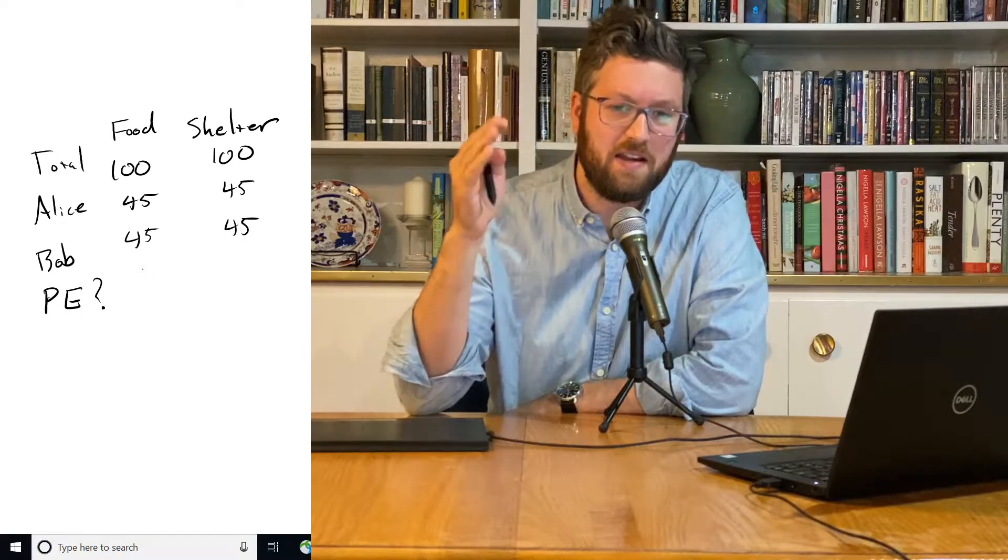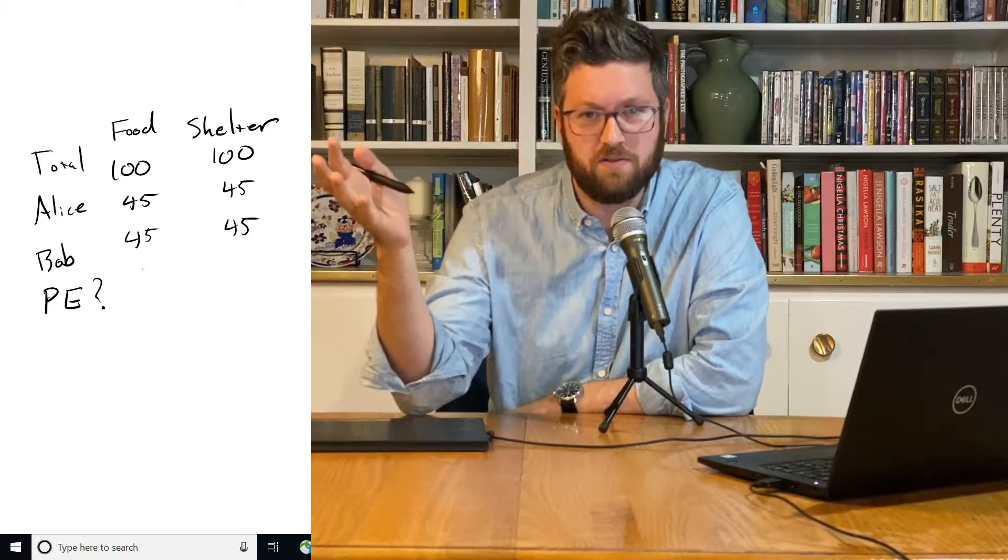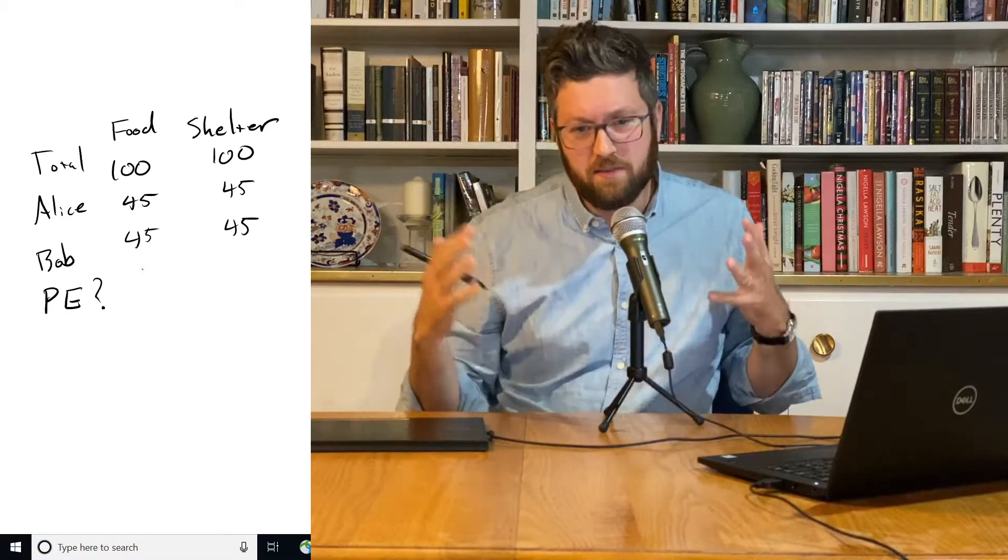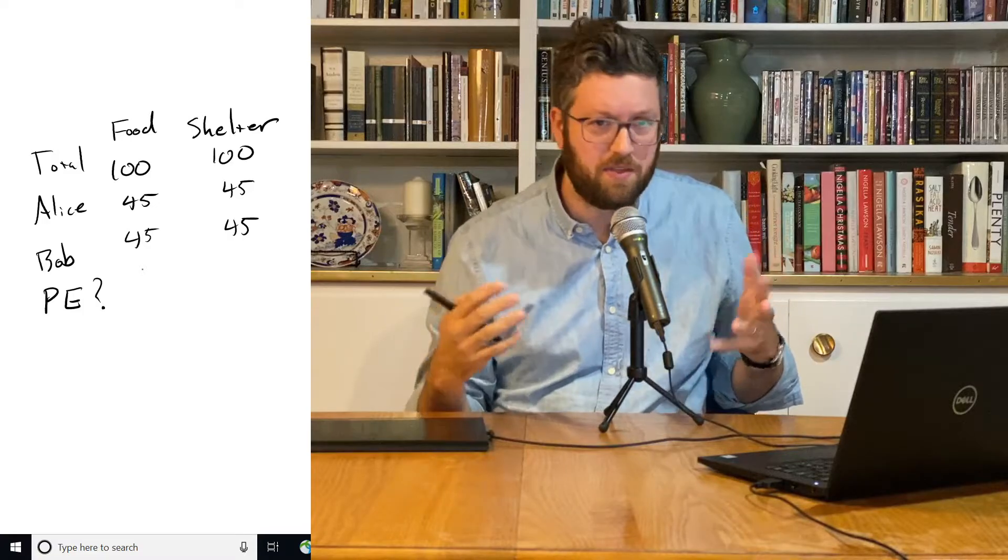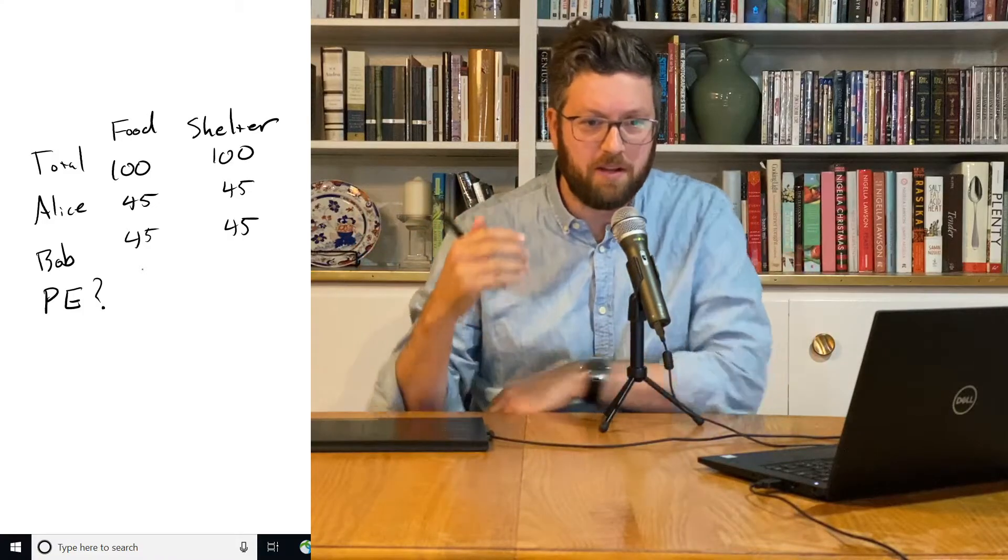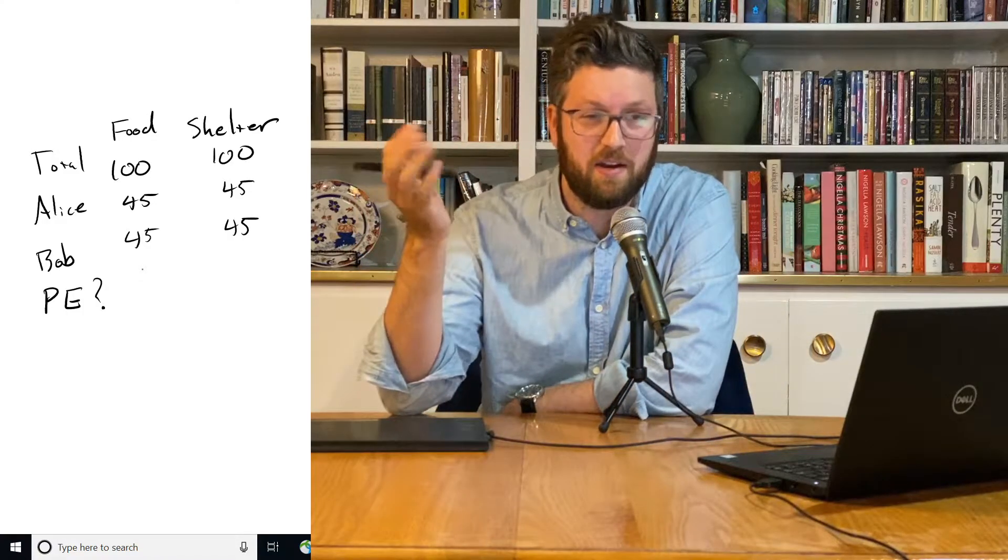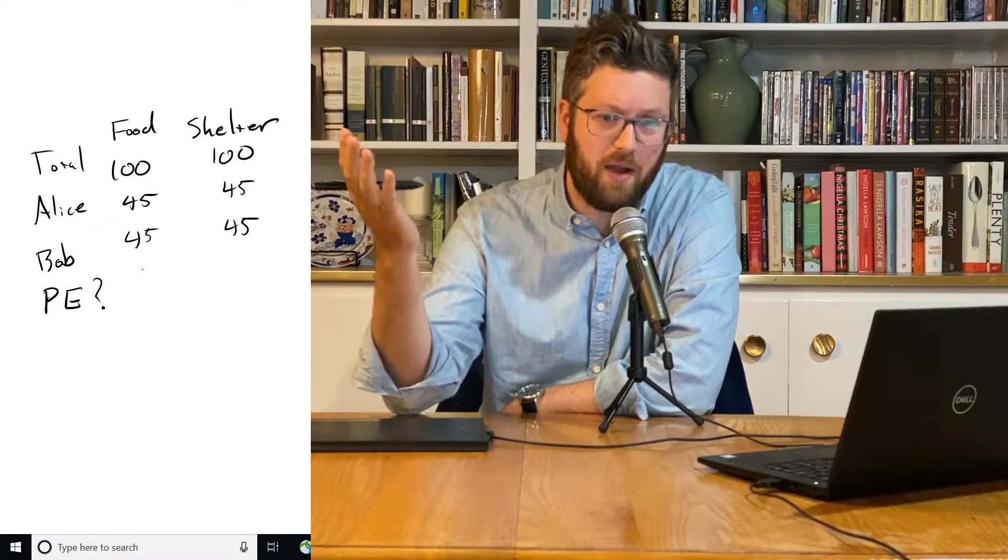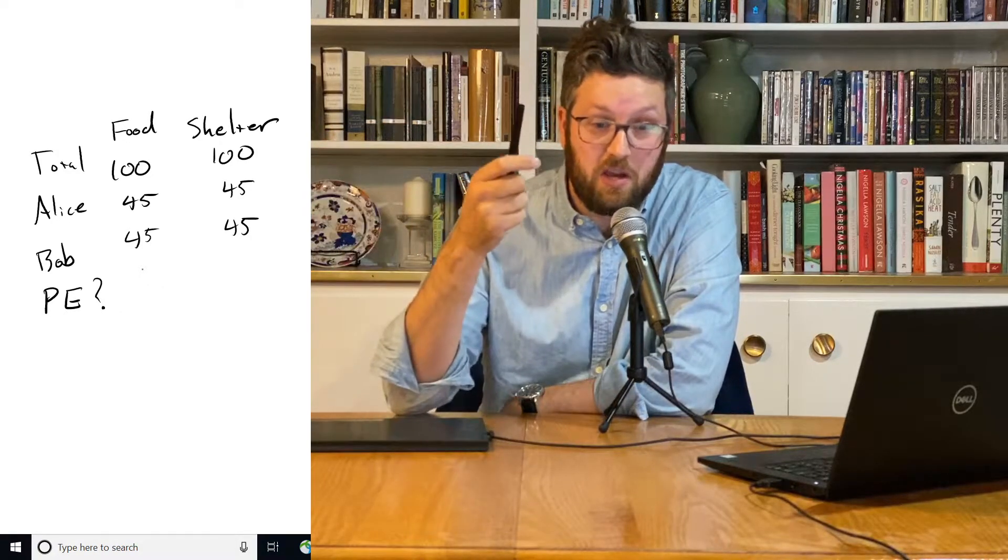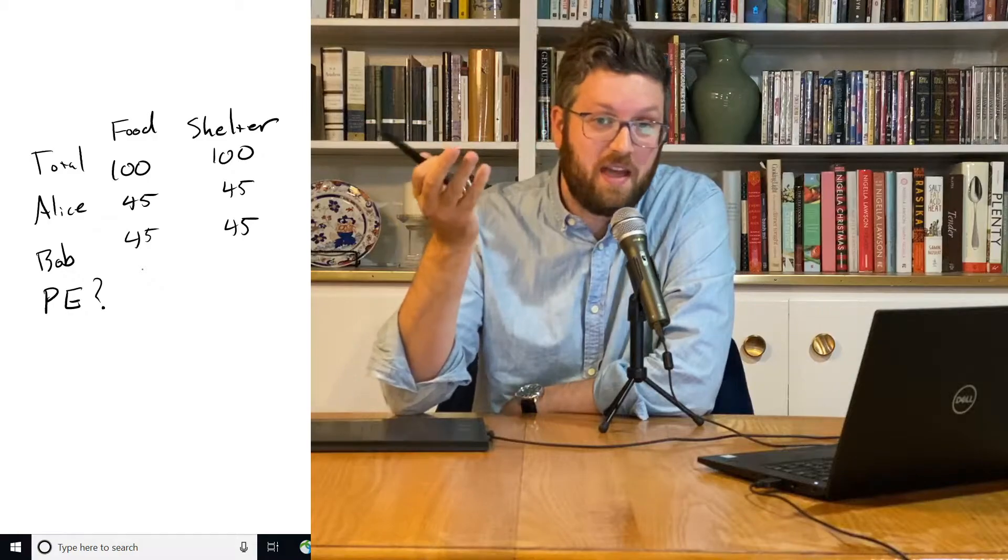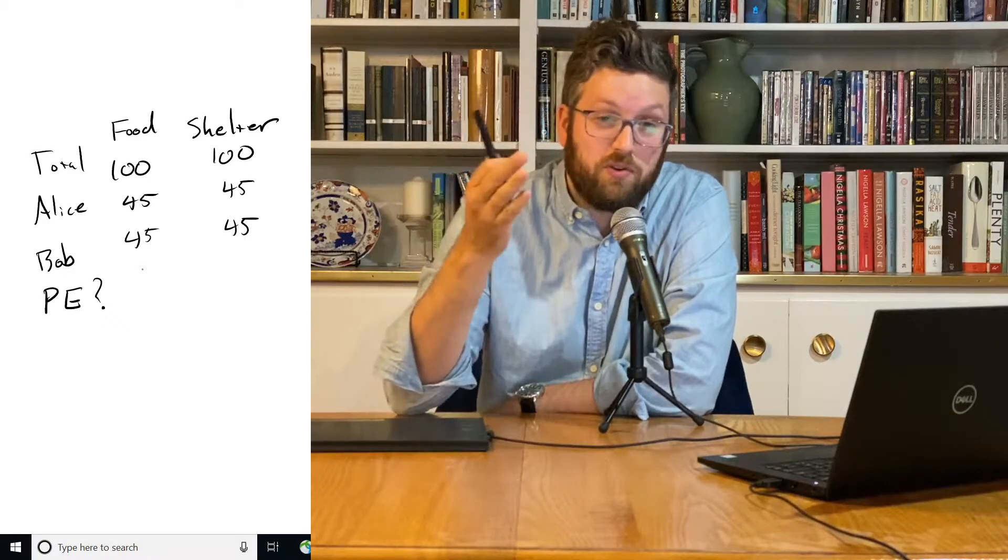We're only allocating 90 units of the food and 90 units of the shelter. And given that there's no one else that we're caring about in this economy, it seems like we're just wasting the other 10. We're just letting it go away. Anyway, we could give it to Alice. We could give it to Bob. And if we did that, it wouldn't make the other one worse off.